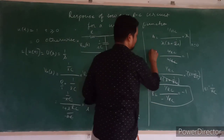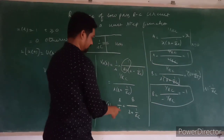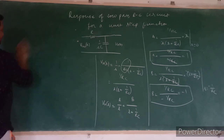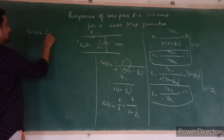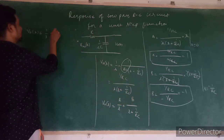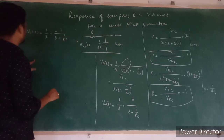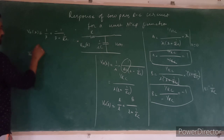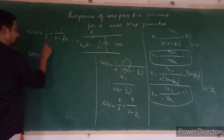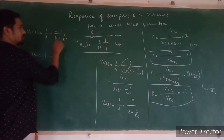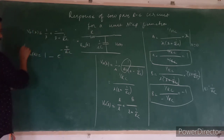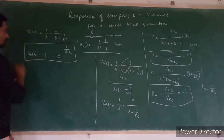Plugging A equals 1 and B equals minus 1 back in, V_naught(s) equals 1 upon s minus 1 upon s plus 1 upon RC. Taking the inverse Laplace transform, V_naught(t) equals 1 minus e to the power of minus t upon RC. This is the expression for the response of a low pass RC circuit for a unit step function.